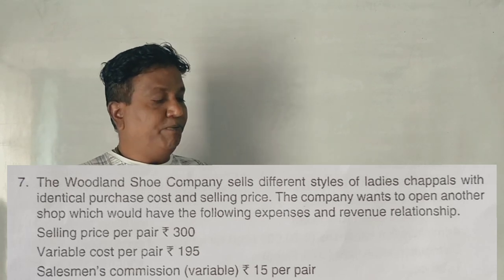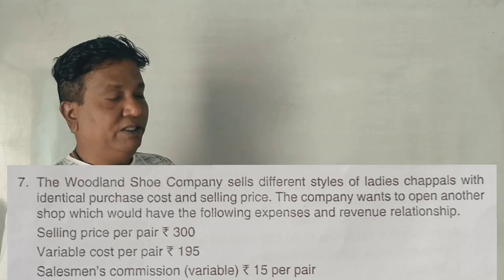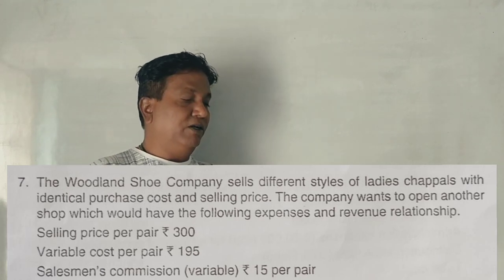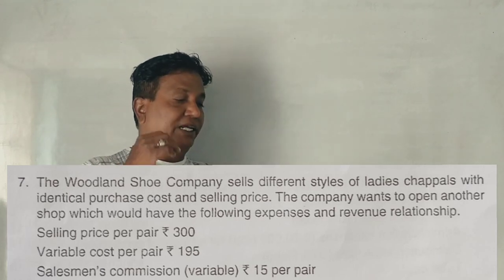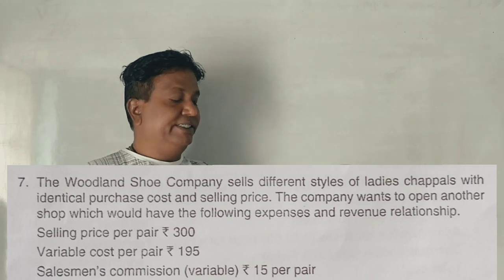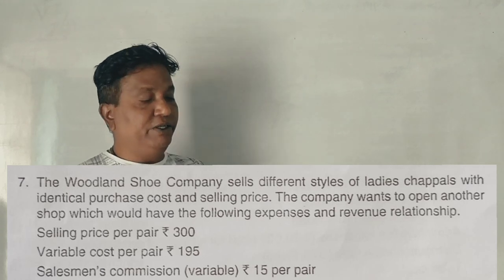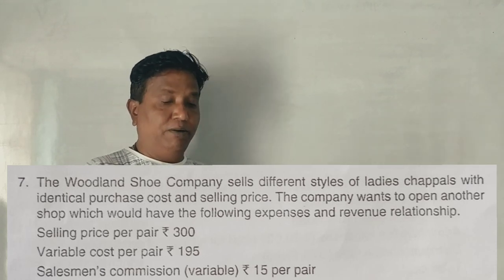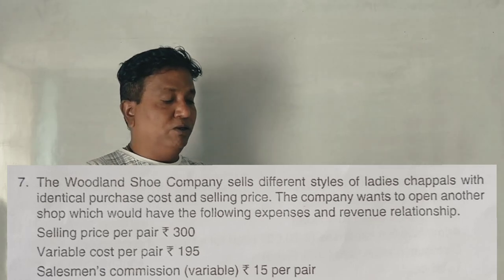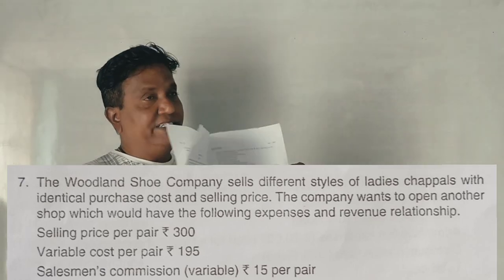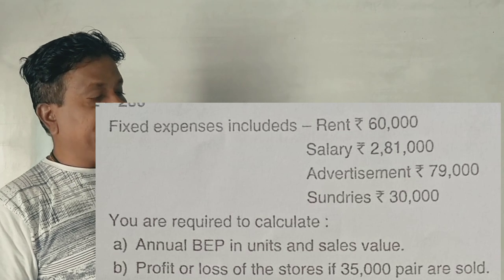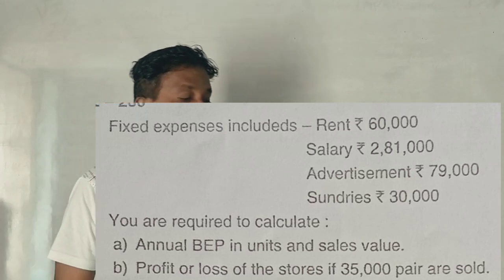Selling price per pair: 300 rupees. Variable cost per pair: 195 rupees. Salesman commission (variable): 15 rupees per pair. Fixed expenses include rent, salary, advertisement, and sundries.